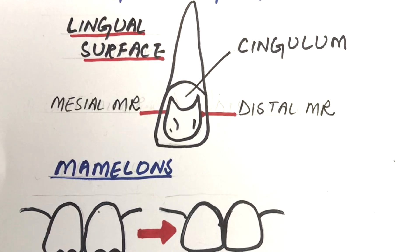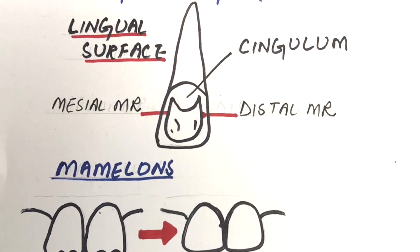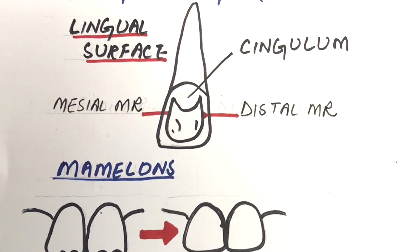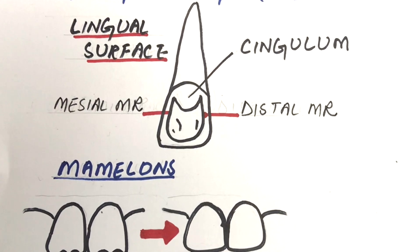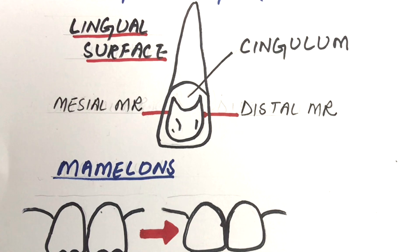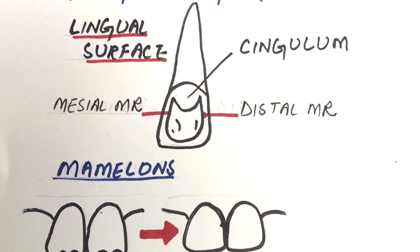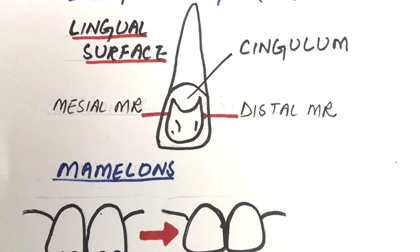Lingual fossa and cingulum are found on the lingual surface of incisors. A lingual fossa is the concavity present on the incisal half of the lingual surface. Cingulum is the convexity present on the cervical third on the lingual surfaces of incisors.